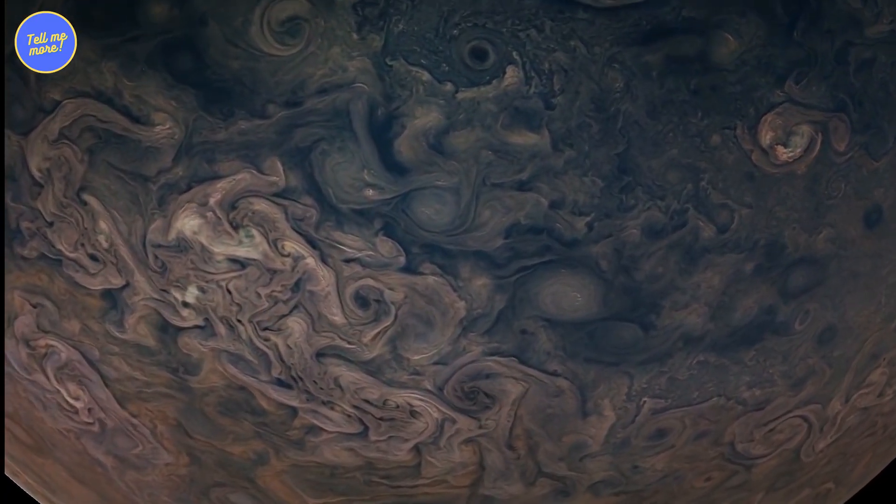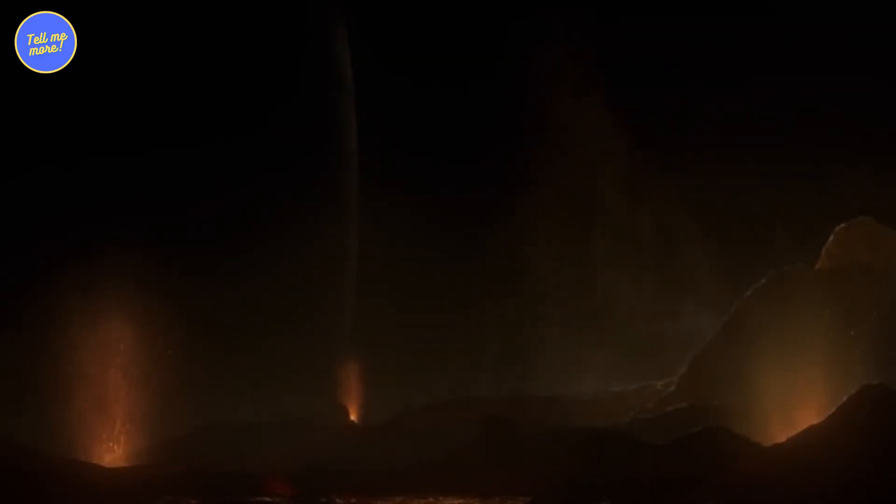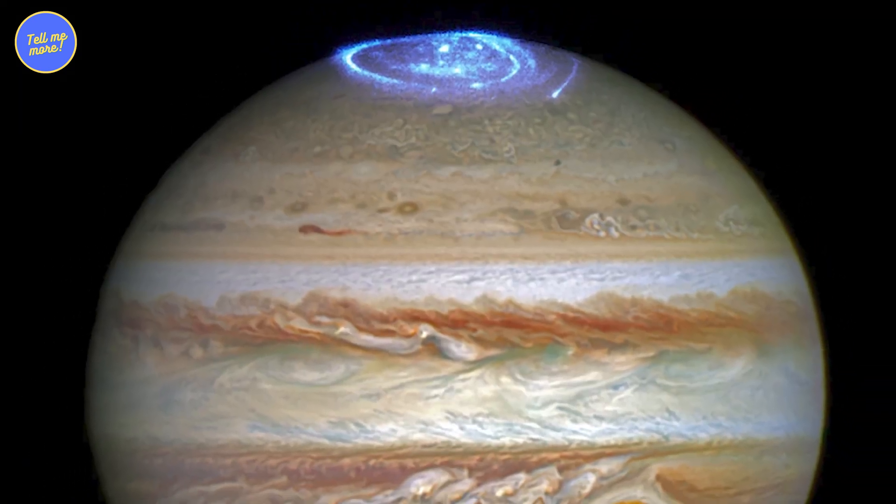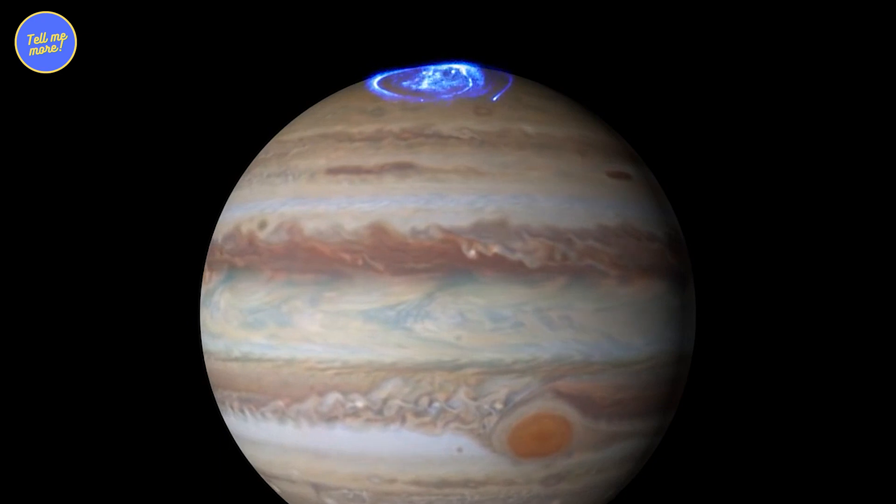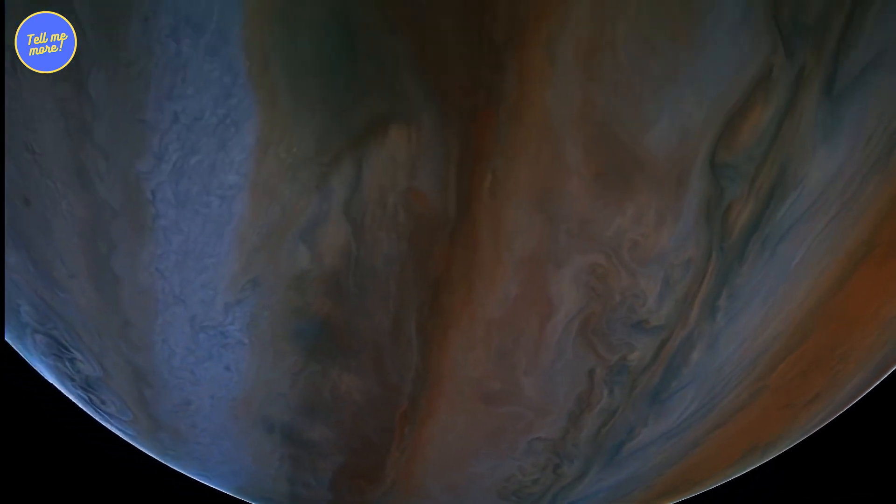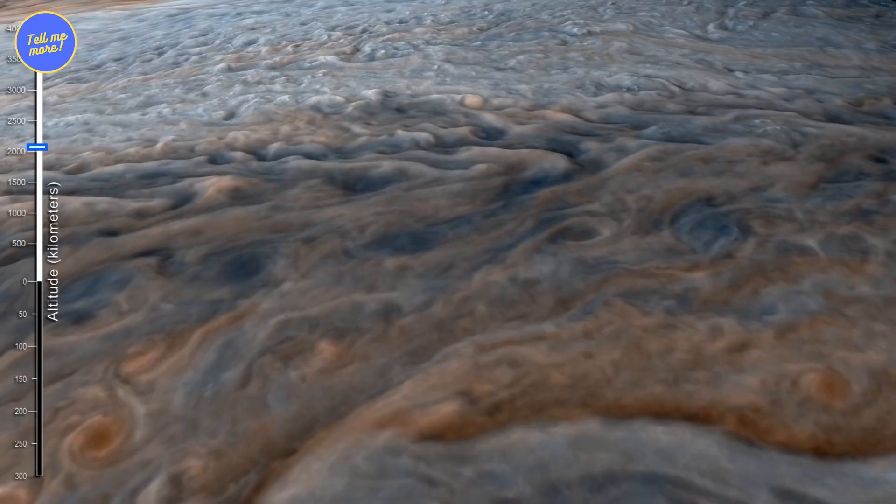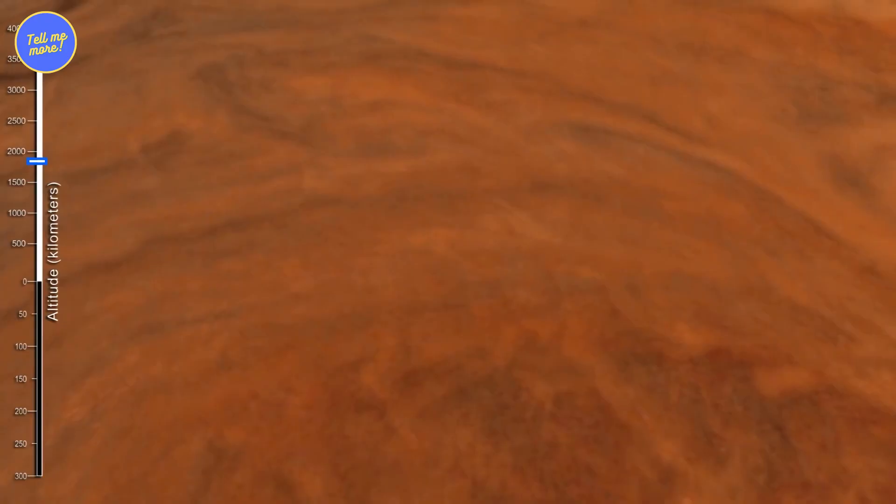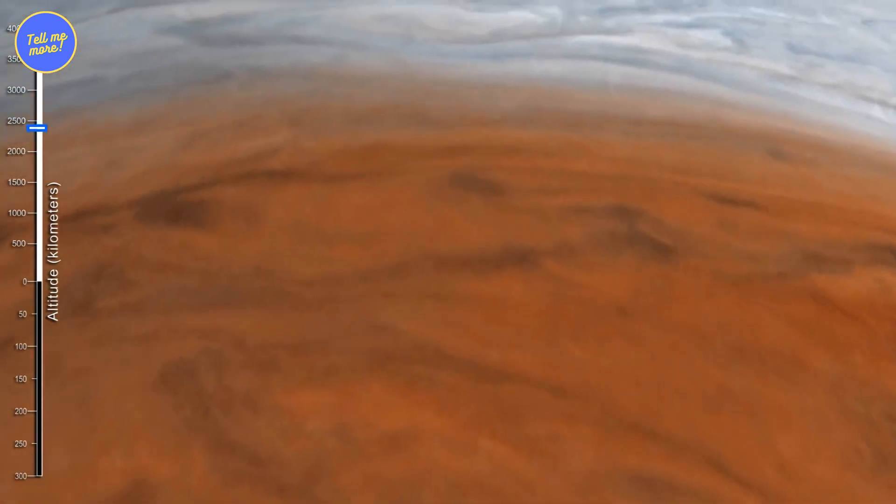Juno's images showed us intricate cloud patterns, massive storms, and the grand finale, those mind-blowing auroras. Those auroras aren't your regular lights. They're like neon paintings dancing in the sky. Juno also peeped beneath the clouds to figure out what Jupiter's made of. And let's just say, this gas giant's got some serious deep secrets.